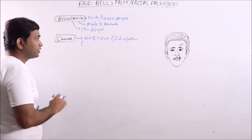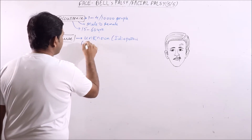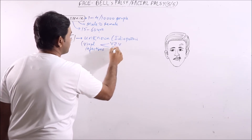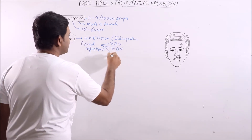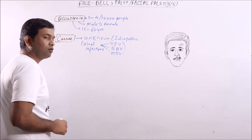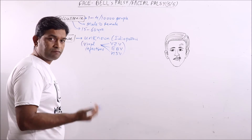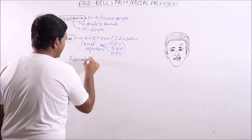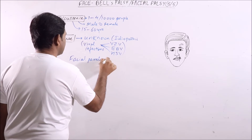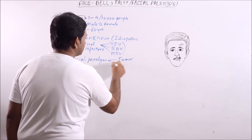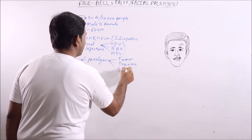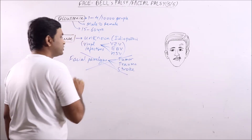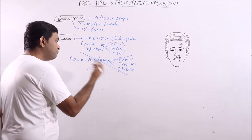Although Bell's Palsy is found to be associated with some viral infections like Varicella Zoster virus, Epstein-Barr virus, and Herpes simplex virus, these are not the direct cause of Bell's Palsy — they are found usually associated with it. Sometimes facial palsy may be associated with tumor, trauma, or stroke, but these are not considered cases of Bell's Palsy. If there is a known cause of facial paralysis, it will not be included in Bell's Palsy.